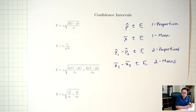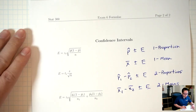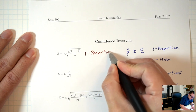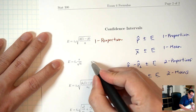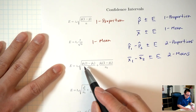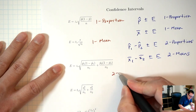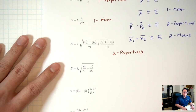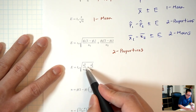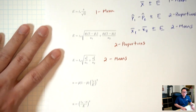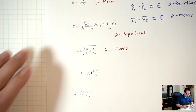In general, z-stars are for proportions and t-stars are for means. The first formula with the z-star is for the one-proportion situation. The second one with the t-star is for one mean. The third one with the z-star and also p-1-hat and p-2-hat is for two proportions. The fourth one with t-star and s-1, s-2, n-1, n-2 is for two means. The last two formulas are for finding the sample size.